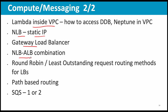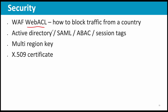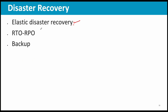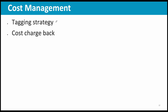Network Load Balancer and static IP, Gateway Load Balancer configuration and usage, NLB and ALB combination, round robin, least outstanding request routing, and flow hash routing — know which is used with which load balancer. Path-based routing and SQS also had questions. Security topics: Web ACL, blocking traffic from a country, Active Directory, SAML, ABAC attribute-based access control, session tags, multi-region KMS keys, X.509 certificates, Elastic Disaster Recovery, RTO and RPO, AWS Backup, and cost management — tagging strategy and cost chargeback.